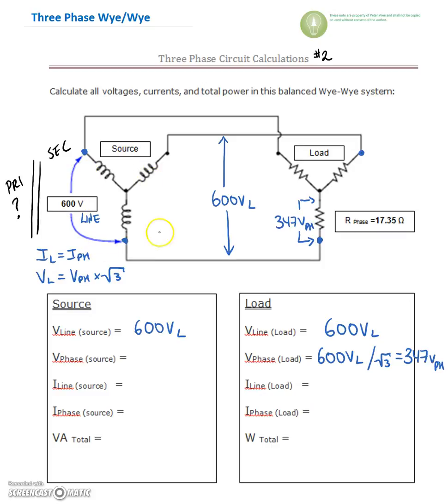Now, this secondary is a Y, and this load is a Y. There's only one secondary and one load, so these guys are a mirror image of each other. So we know that the voltage here is also going to be 347.